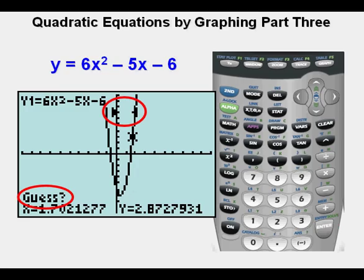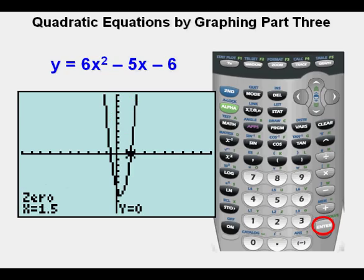He now has the two inward facing arrows and guess appears to the lower left. He presses enter. The solution is marked on the x-axis and is identified as 1.5. That's one of the two solutions to this quadratic equation.